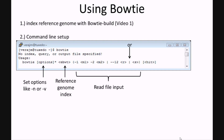Then you add your read files. Depending on the type of file input that you're doing, you have to format it a specific way. Bowtie will assume that your read files are in FASTQ format. To use any other type of file, like a FASTA, you have to set the appropriate options. Lastly, you then name the file that the alignment will be written out to.